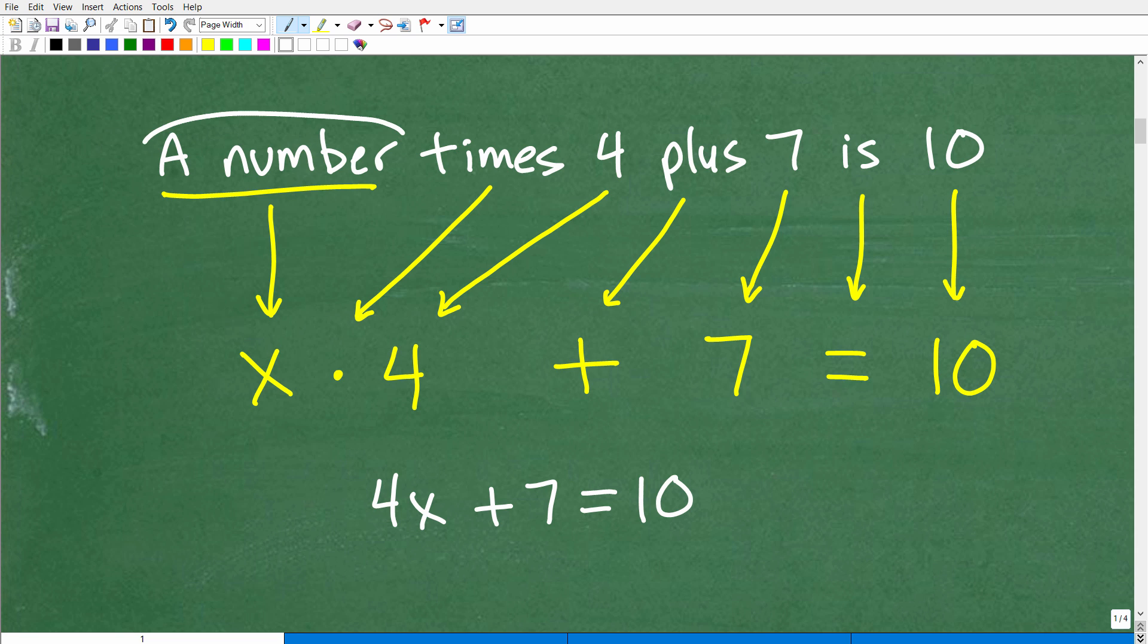All right, so here is the problem. A number times 4 plus 7 is 10. So we need to translate this into algebra. Okay, that's really the key to solving this problem. So let's just take this word by word or phrase by phrase. So a number. Okay, well, what is a number? Well, you don't know what that number is. So in algebra, what we do is we use a variable. And that variable, like a variable x, represents a number. It represents a value. So a number is just some number x times means what? That's multiplication. So we'll just kind of think of that for right now as a little multiplication operator. So a number times 4. So we'll have this right here. Some number x times 4. Okay. We're just kind of going through this sentence one by one, one word at a time.